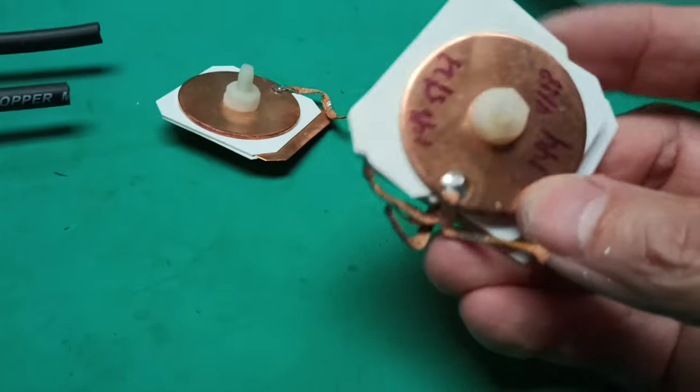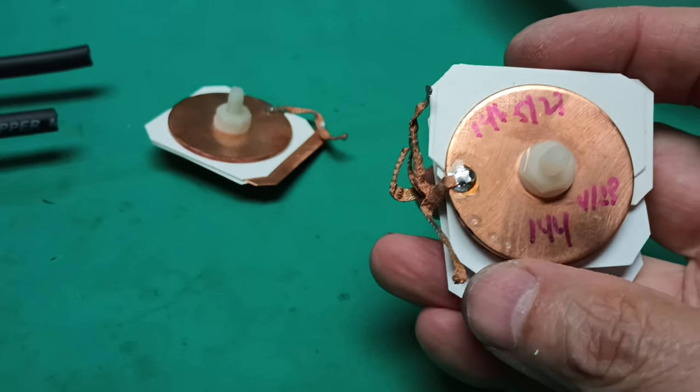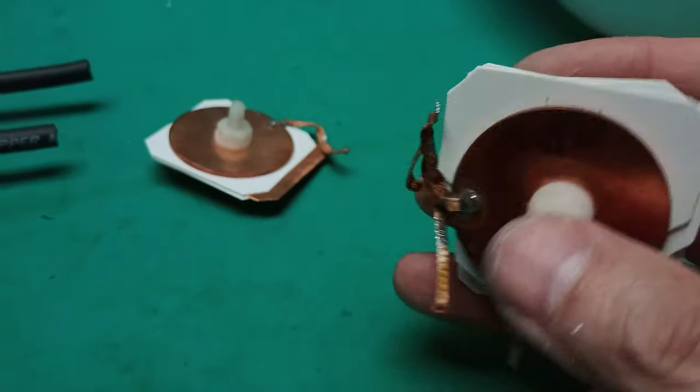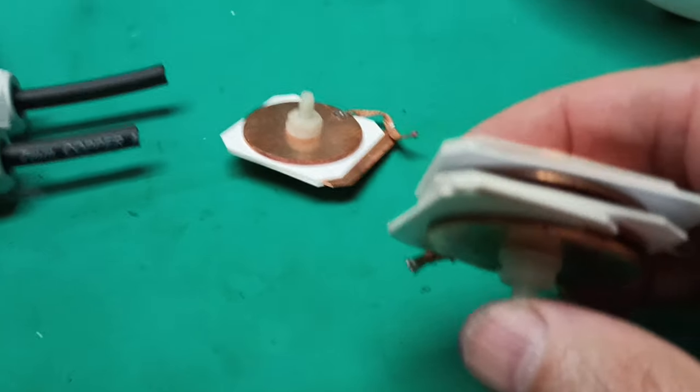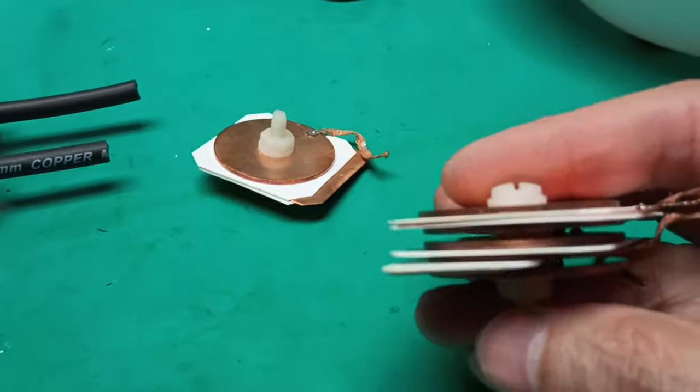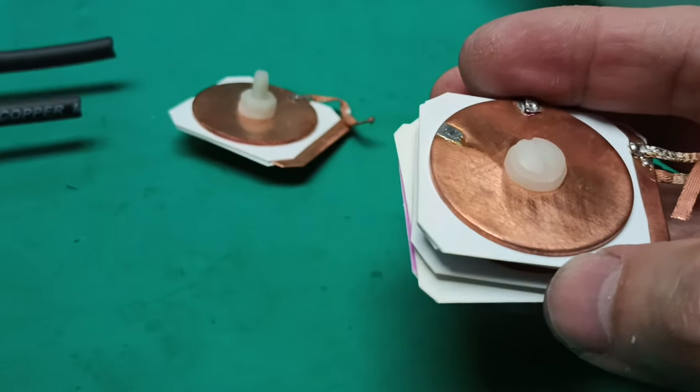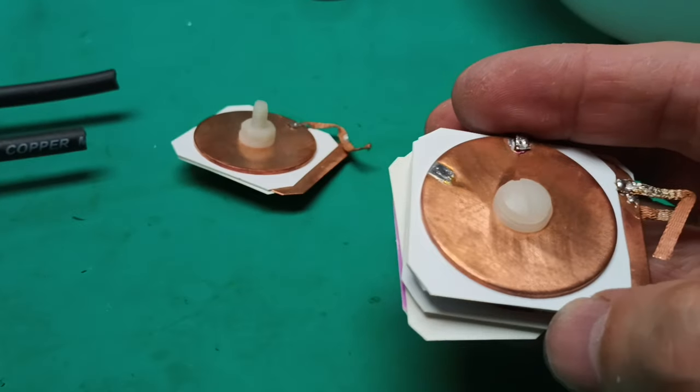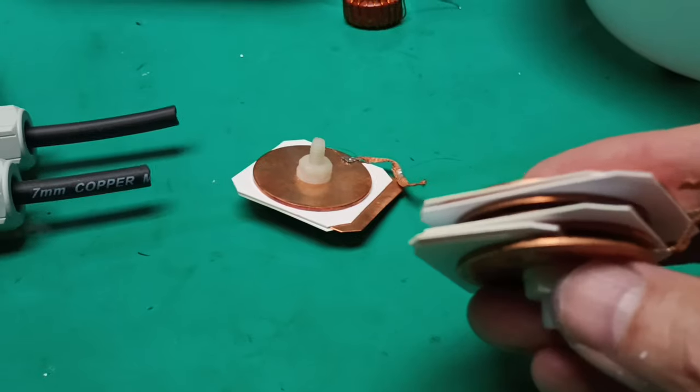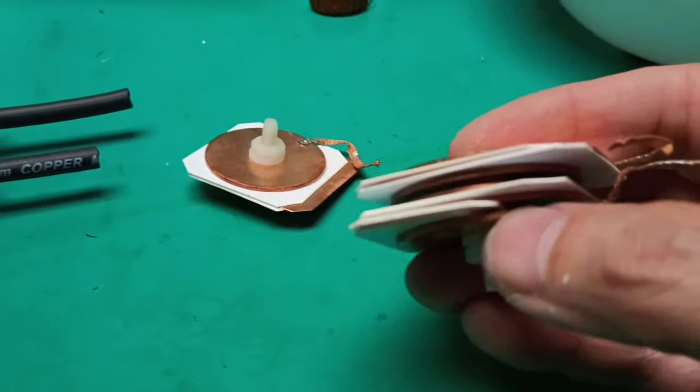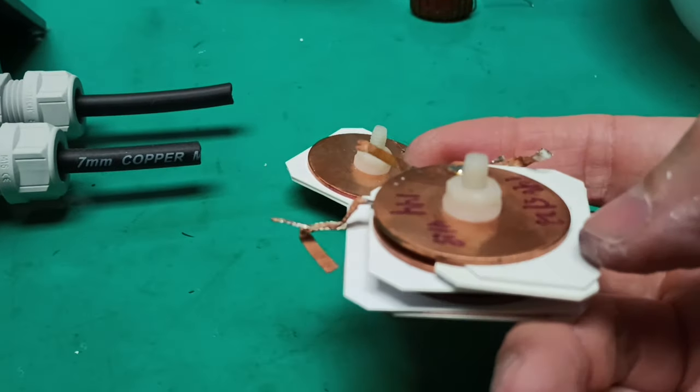That is a 146 picofarad stack. One, two, three, four, five copper disks. And it's adjustable. Between these disks there's sheets of polystyrene sheet from the hobby model world. And down here, sheet goes part way through for adjustability. It's kind of like a shim.